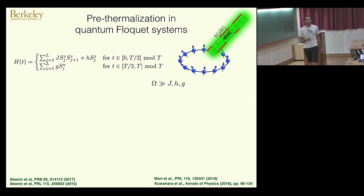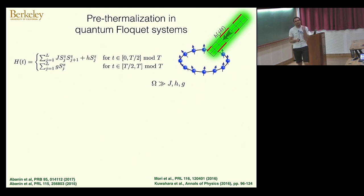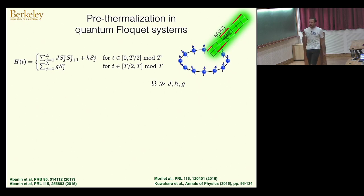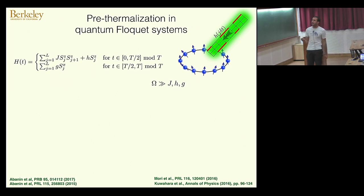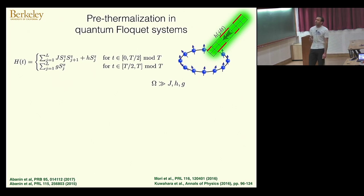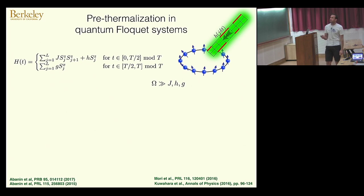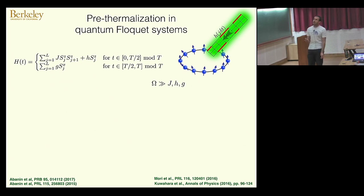Let me give an intuitive argument — repeating Wenwei's intuitive argument from yesterday about Floquet pre-thermalization. If I take a many-body system, it has single-particle processes such as spin flips or nearest-neighbor interactions. Now I want to shine a periodic drive on my system with frequency ω.